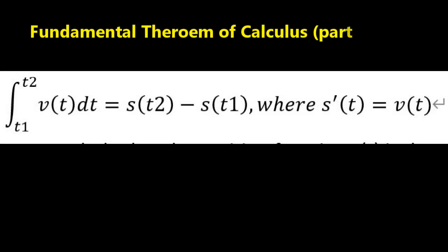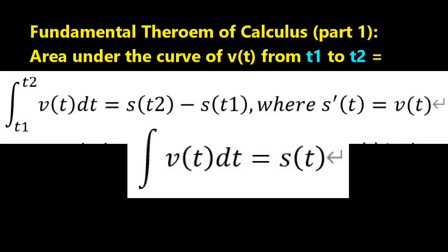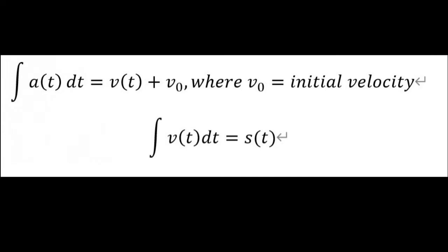We can generalize this, changing the 5 and 1 into two arbitrary moments in time, and we will end up with the fundamental theorem of calculus part 1. We can conclude that the position function s of t is in fact the integral of the velocity V of t. In the same logic, the velocity function is the same as the integral of the acceleration a of t.